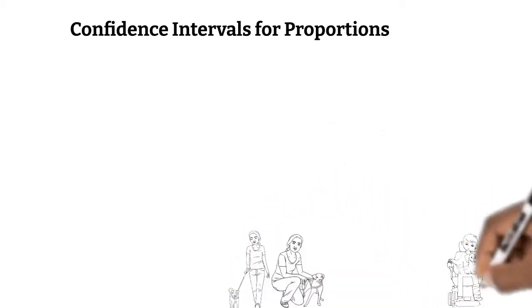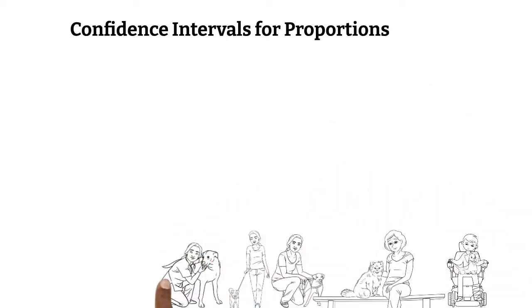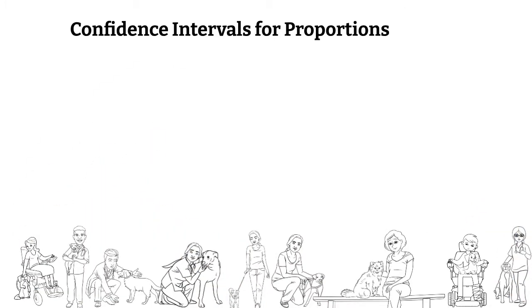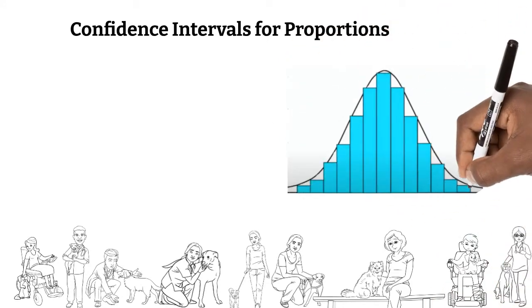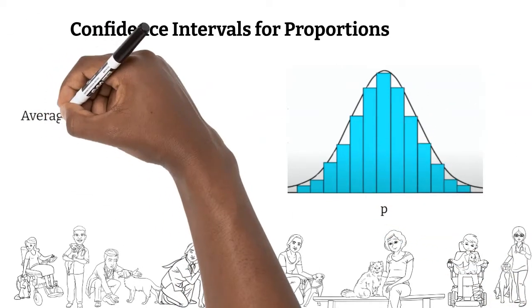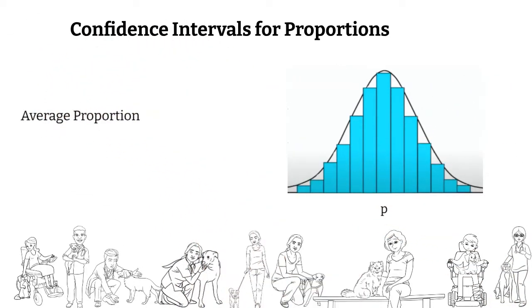In the example that we previously explored, several samples were surveyed to see what proportion of each sample were pet owners. We learned that the proportions for all our samples, if graphed on a histogram, would form a normal curve, with the average proportion at the center. This average proportion, if sufficient samples are taken, also represents the true proportion of pet owners in our population.